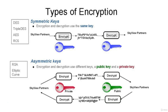If they use a code, both will require a copy of the same codebook. If they use a cipher, they will need appropriate keys. If the cipher is a symmetric key cipher, both will need a copy of the same key. If it's an asymmetric key cipher with the public-private key property, both will need the other's public key.